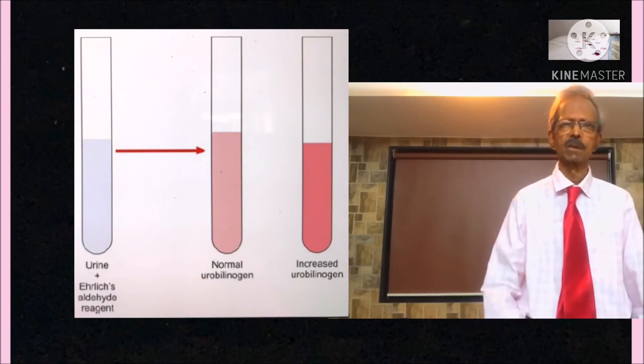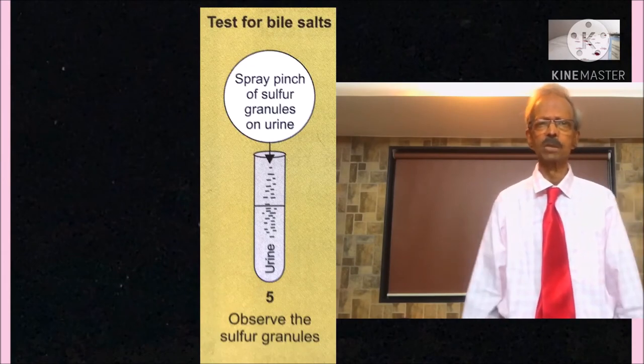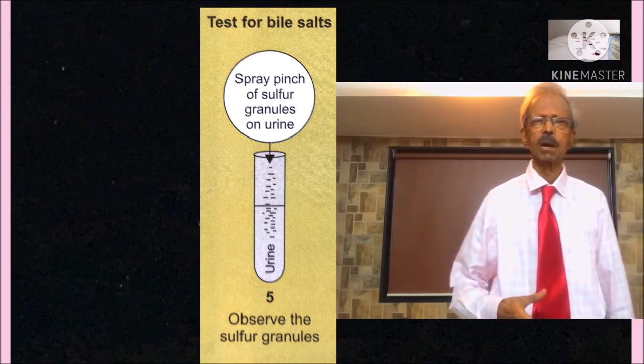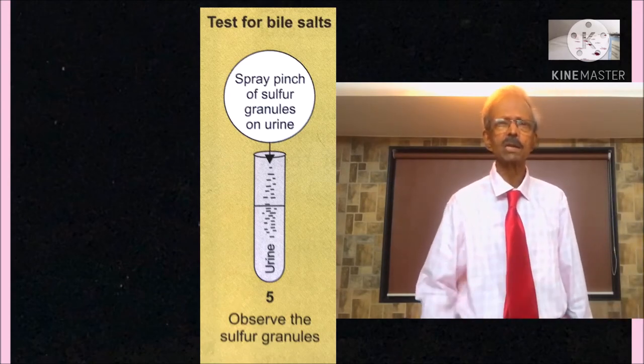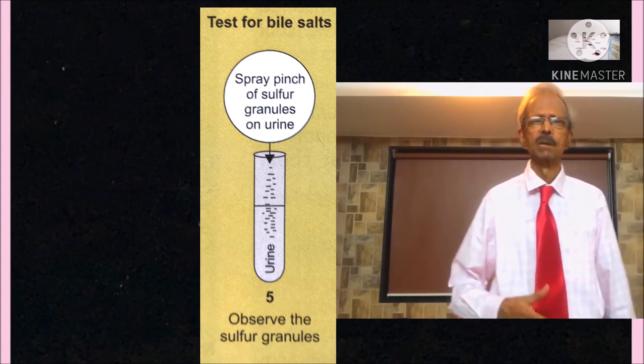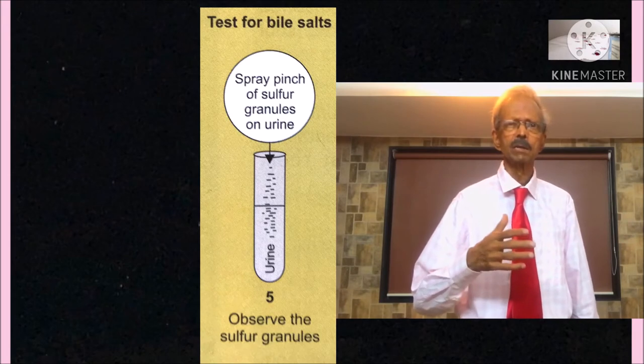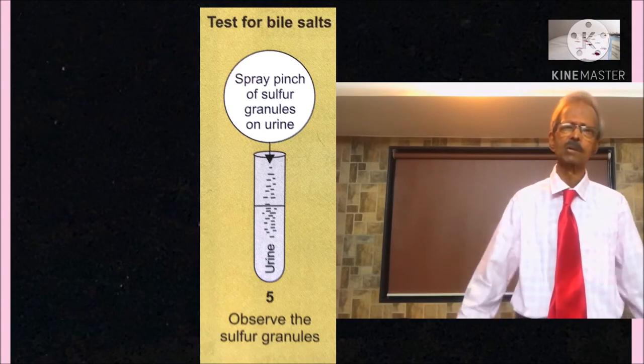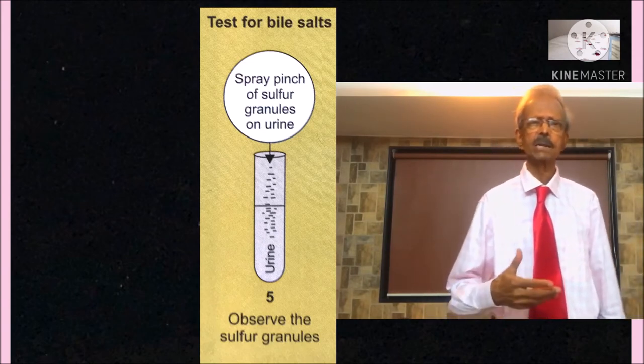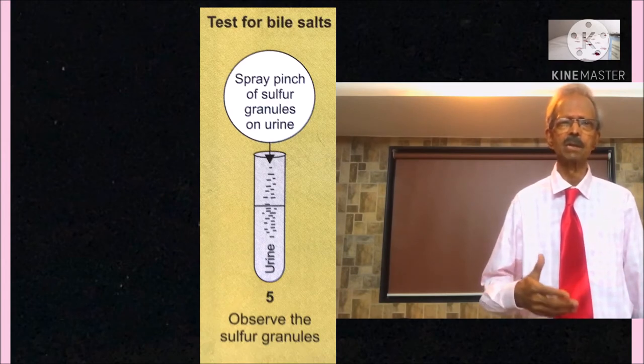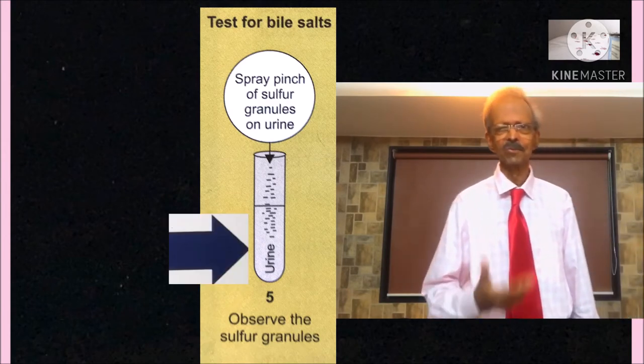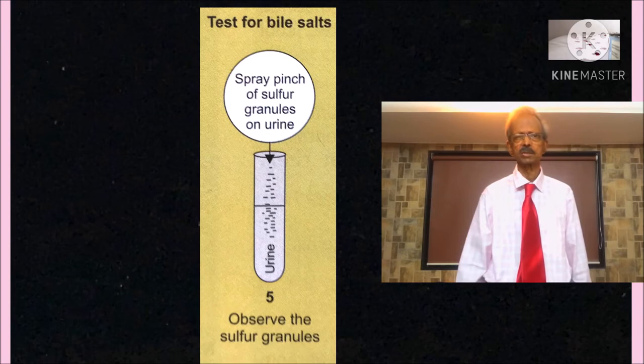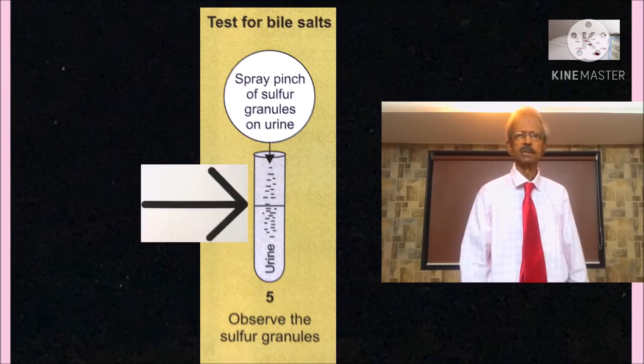Then for the determination of bile salts, pour about 10 ml of urine in a medium size test tube and sprinkle small amount of dry sulfur powder on the surface of the urine and observe the sulfur particles. If bile salts are present in urine, then they will reduce the surface tension of urine and sulfur particles will start settling at the bottom. And if bile salts are absent, then sulfur powders will not settle at the bottom. They will remain floating on the surface only.